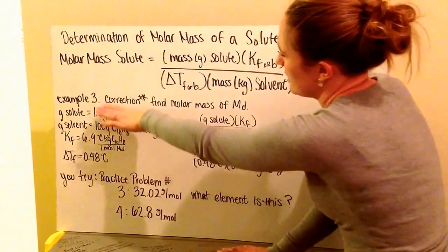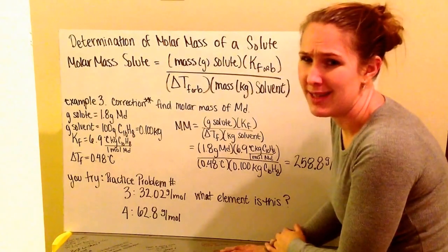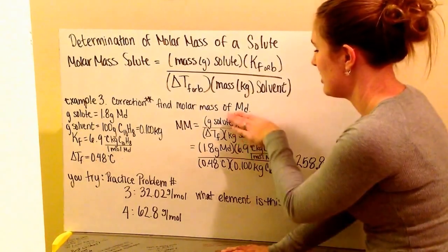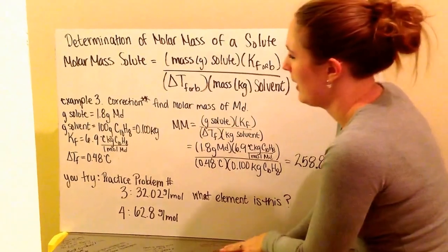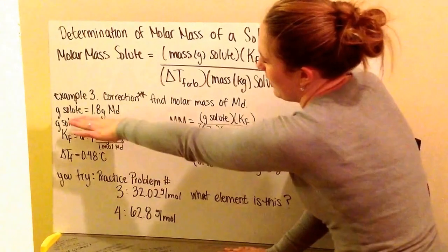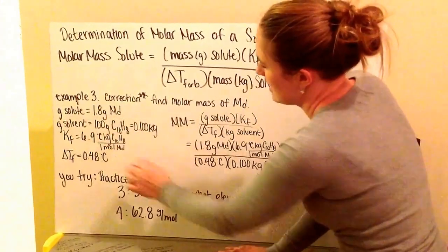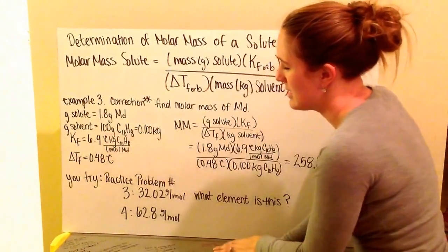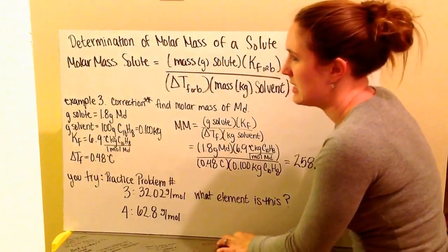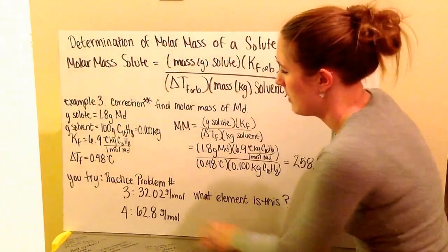For example 3 in your packet, it says sulfur but that's a typo - it should say Md, which is Mendelevium. Your grams of solute are 1.8 grams of Md. Your grams of solvent is 100 grams of naphthalene, which is what they put in moth balls - that's C10H8.